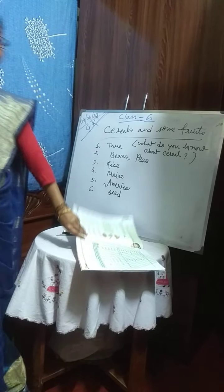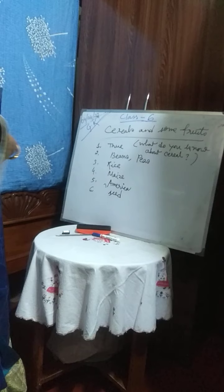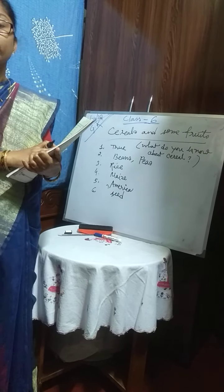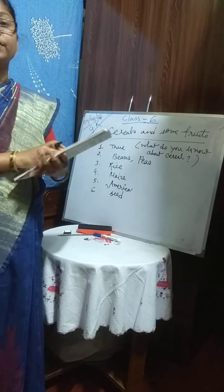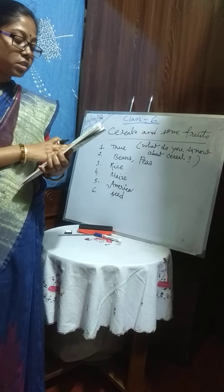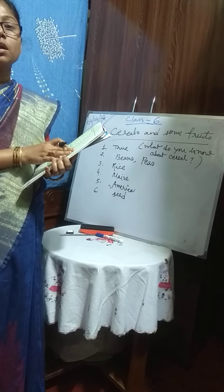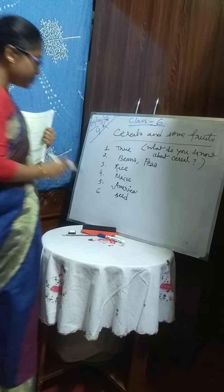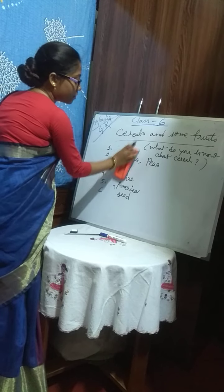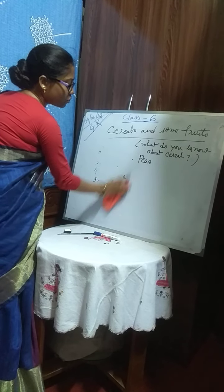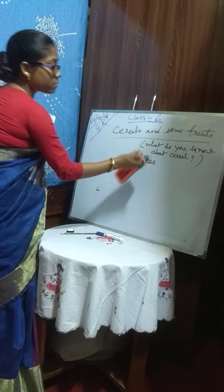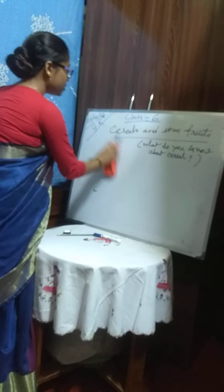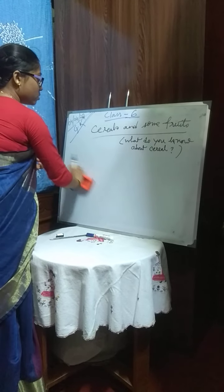Now here is a match-the-following exercise. You have to match the food items to the cereals used in making them — meaning the cereals used to make certain food items. Which cereal is used for which food purpose, that we have to write. Hopefully you have already written in your book. Only the question needs to go in the copy.